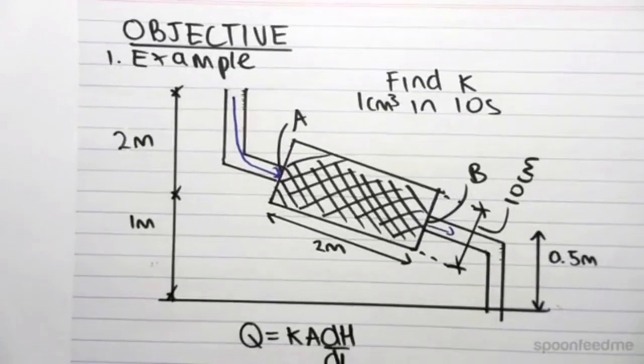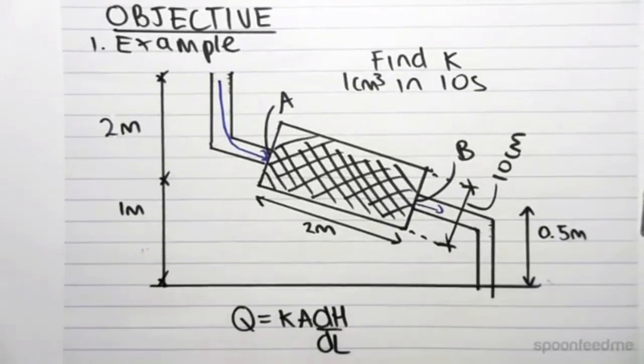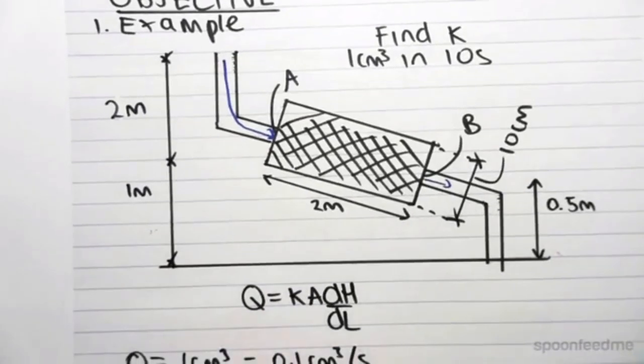Now dh and dl, the hydraulic gradient. So we're going to have to find the head at point A and the head at point B and see the change in head.